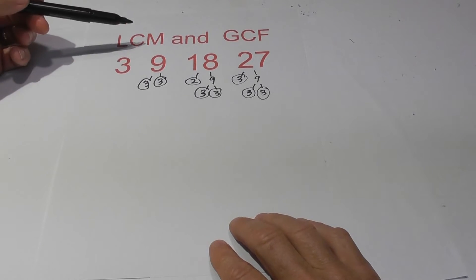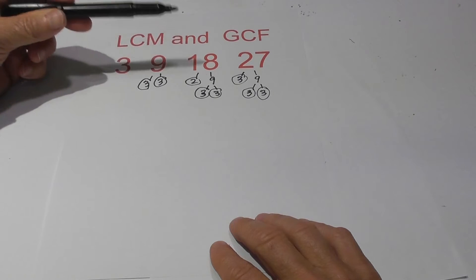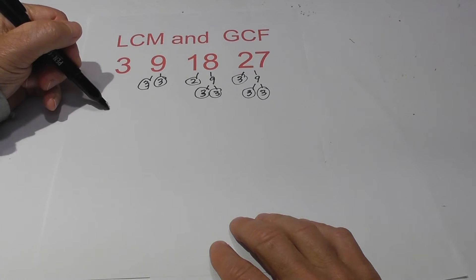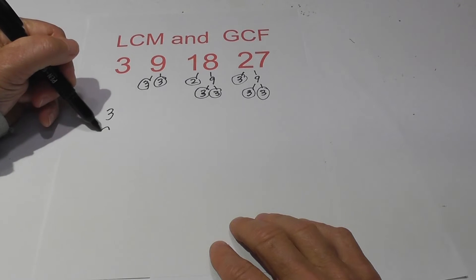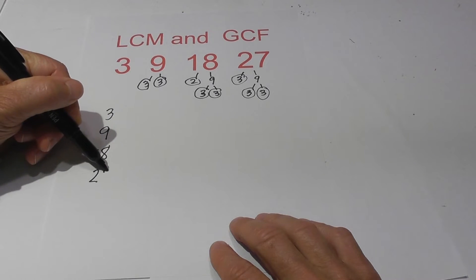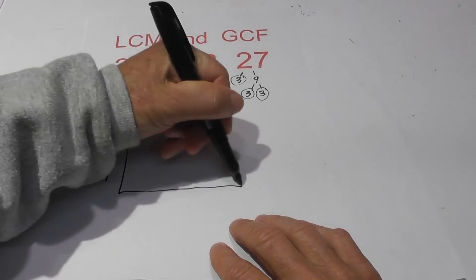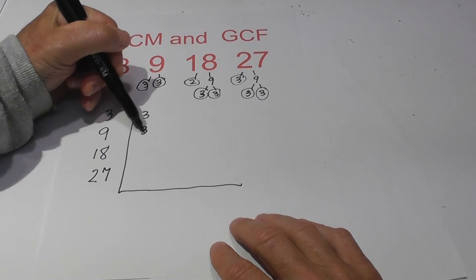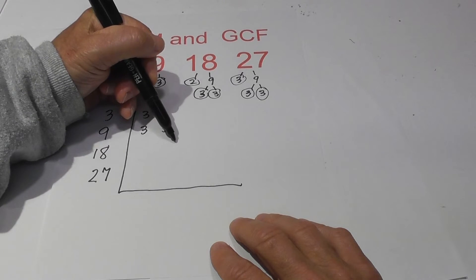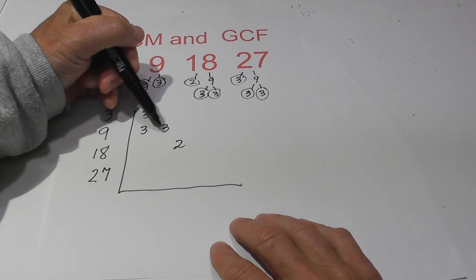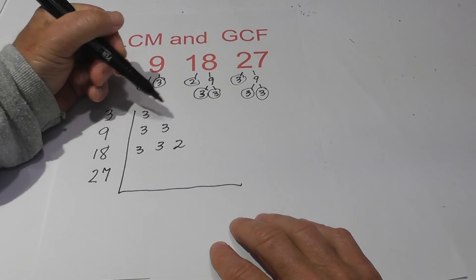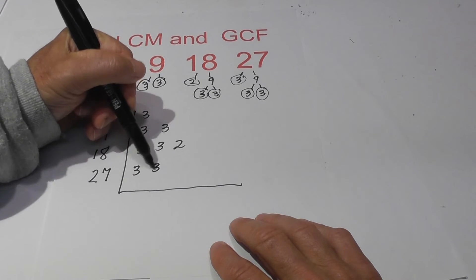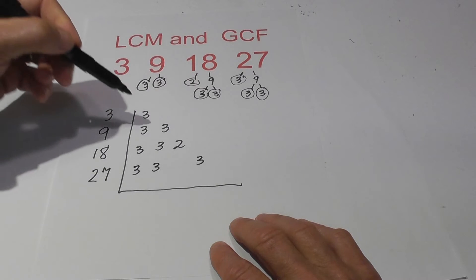In this example, we're going to find the LCM and GCF of three, nine, eighteen, and twenty-seven. And to speed things up, I went ahead and created the factor trees. So I'm going to create the most important thing, the chart. And now I write the prime numbers. Three is just three. For the nine, I've got three and three. For the eighteen, I'm going to skip over the threes, and I'm going to write the threes of eighteen here. And then for the twenty-seven, I've got three, three, and I'm going to skip the two.